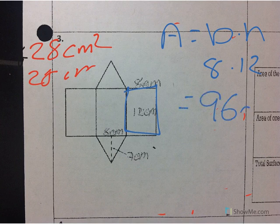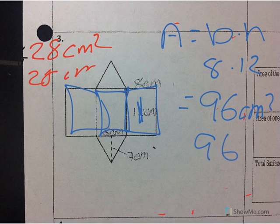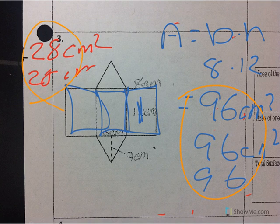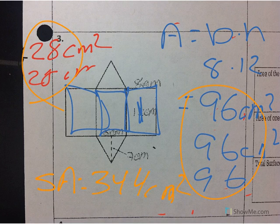I know that this rectangle is the same as this one and this one, so they all have an area of 96 centimeters squared. I'm going to add these three together and these two together, and that's going to give my total surface area of 344 centimeters squared.